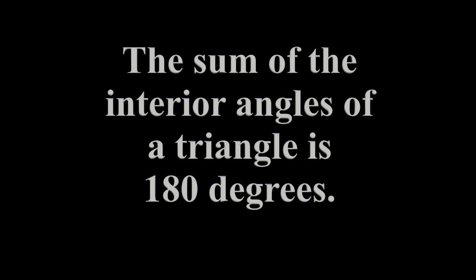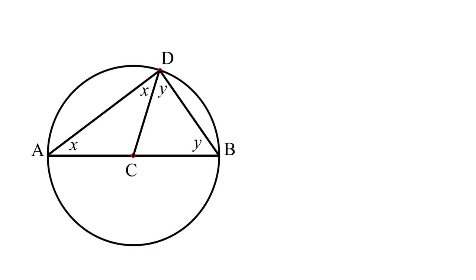The sum of the interior angles of a triangle equals 180 degrees. Look at triangle ADB. The sum of its angles is X plus X plus Y plus Y. This sum equals 180 degrees.